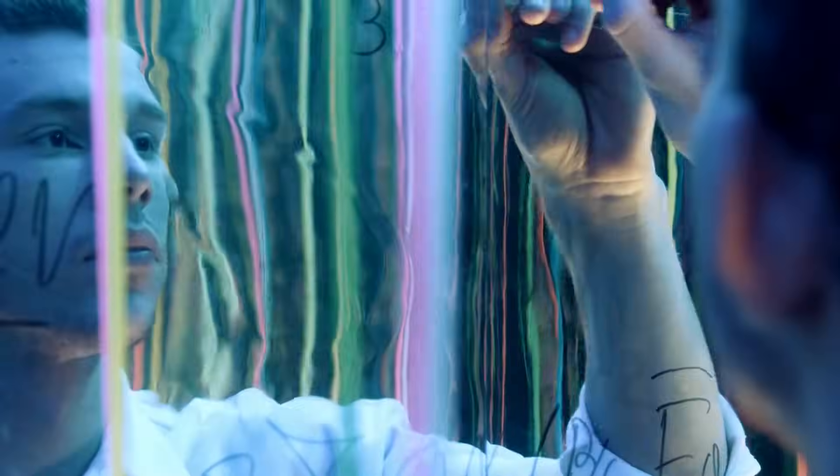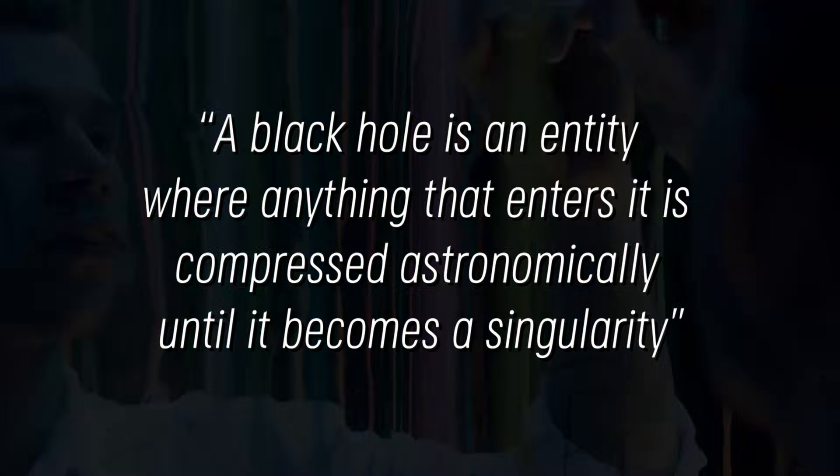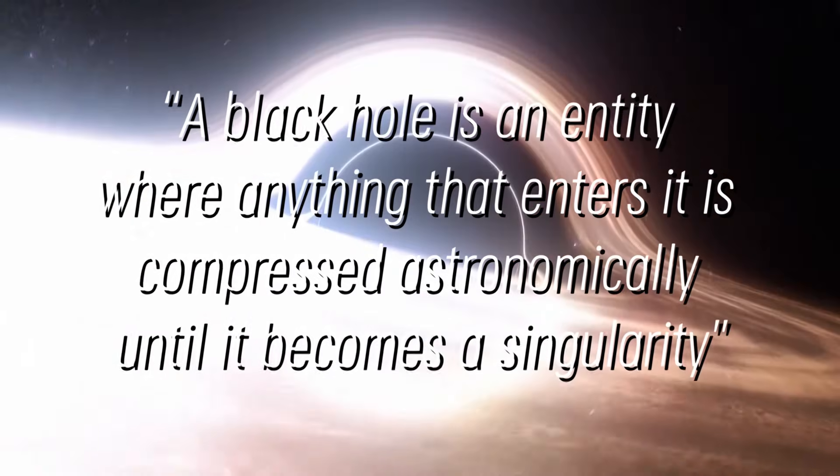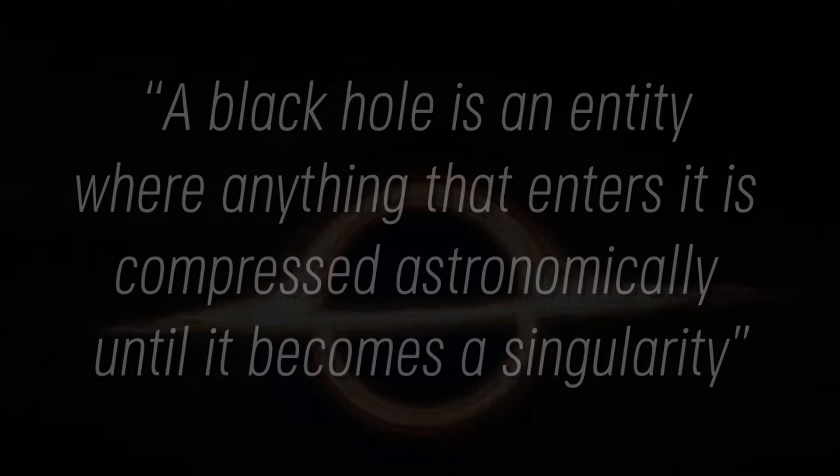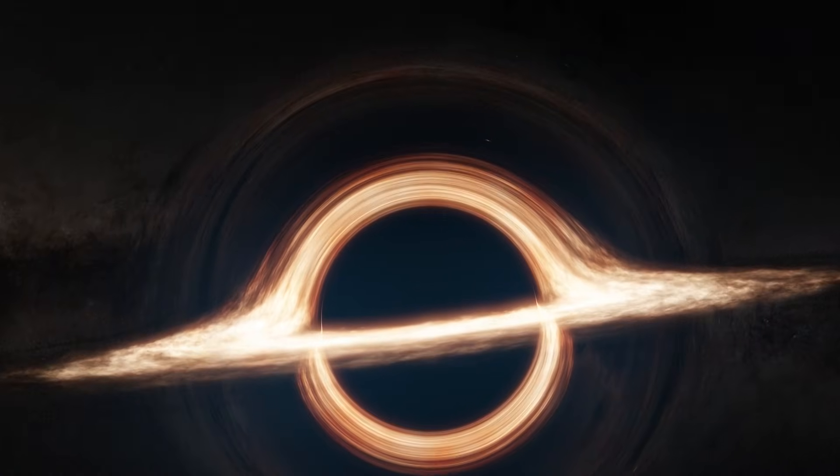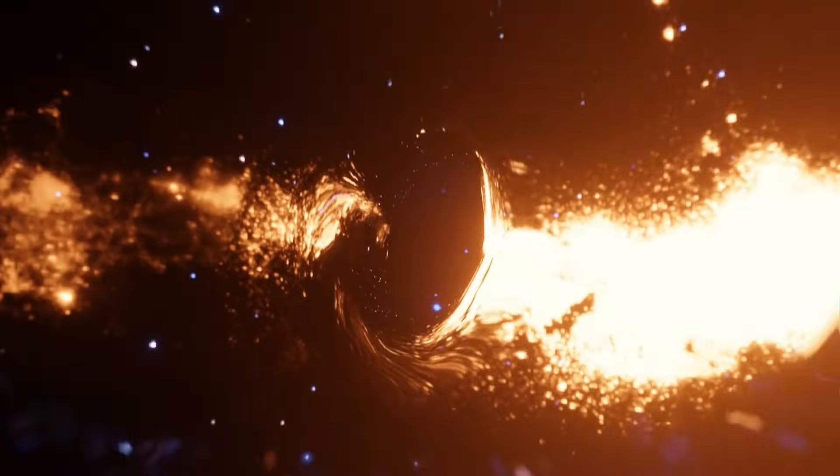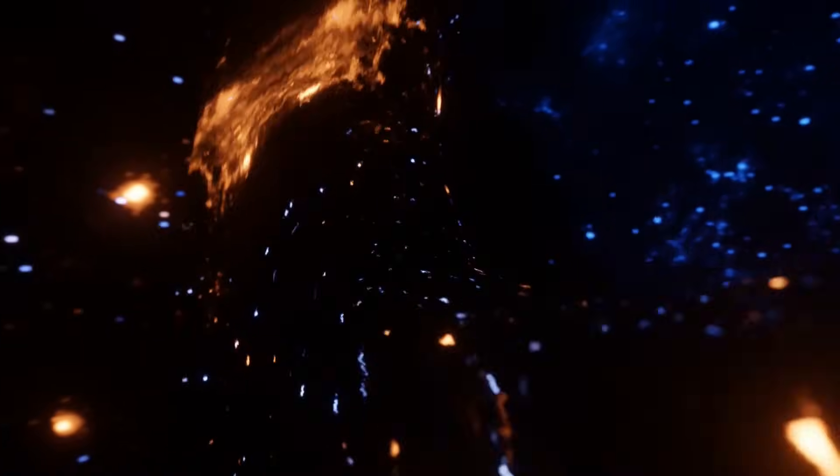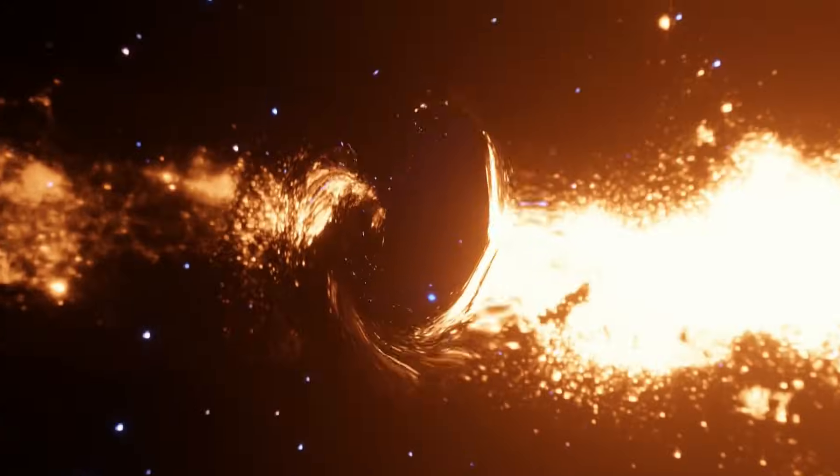According to most physicists around the world, a black hole is an entity where anything that enters it is compressed astronomically until it becomes a singularity. They have explained that due to the way black holes work, if someone were to fall into one, they would stretch like spaghetti, slowly dying in this form before reaching the final spaghetti form. This is one of the scariest parts of the research done on black holes, and is also what makes everyone want to know all the details.